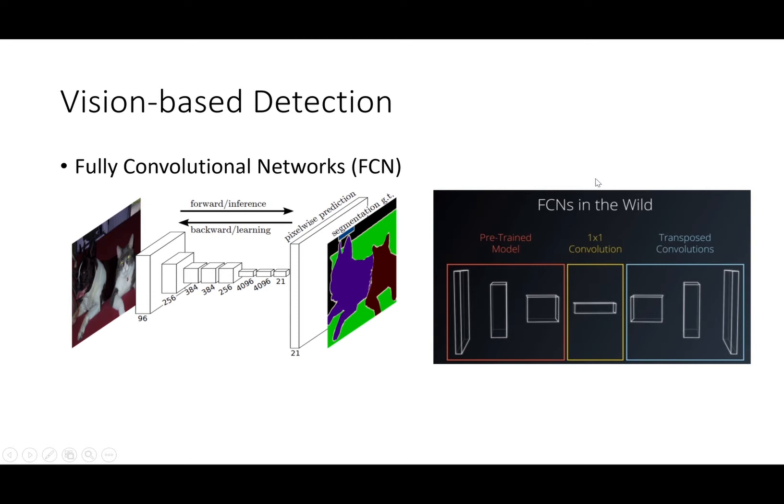Basically, FCN consists of three parts. The first part is a pre-trained CNN model, or encoder. Then it is followed by one-by-one convolutional layers. And finally, it is followed by multiple layers of transpose convolution, or decoder, which I will dive into details in the following slides.